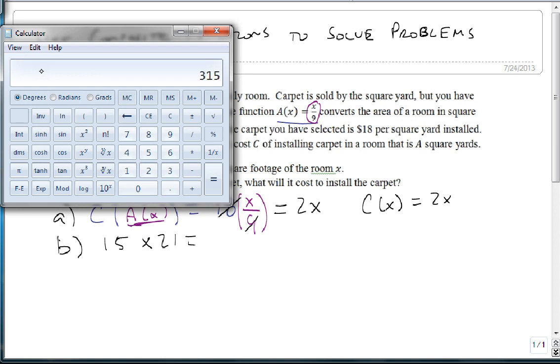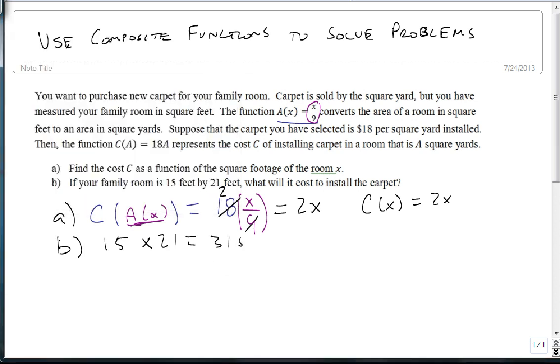15 times 21 is 315. We then plug 315 into our cost function. So we get 2 times 315 or 630 to figure out that it will cost us $630 to install the carpet into our family room.